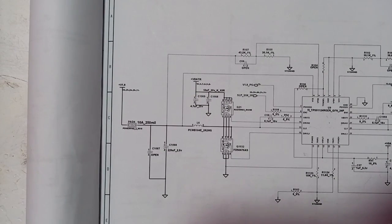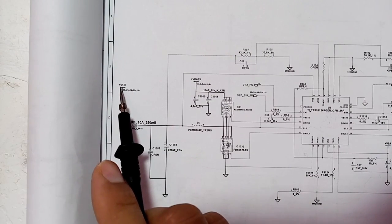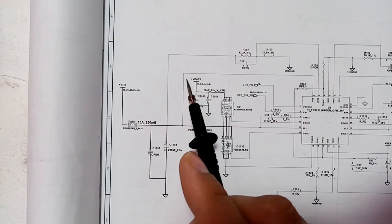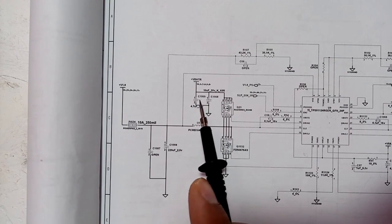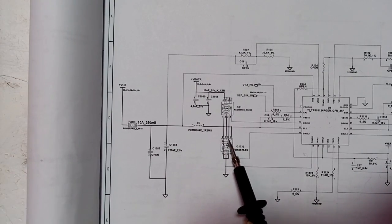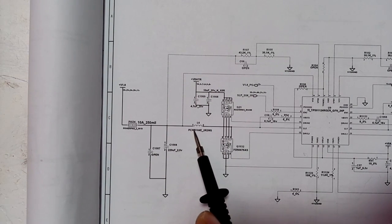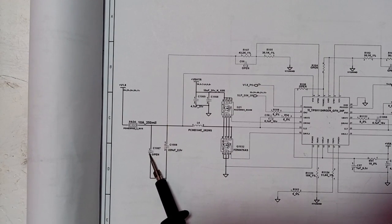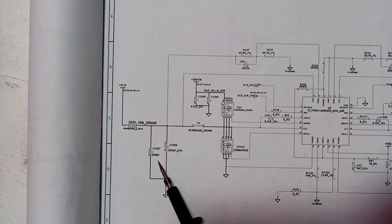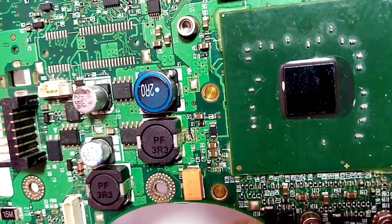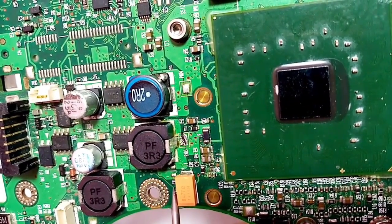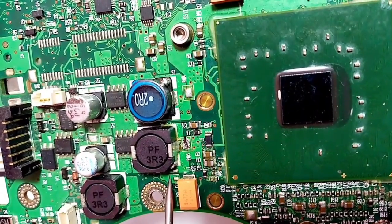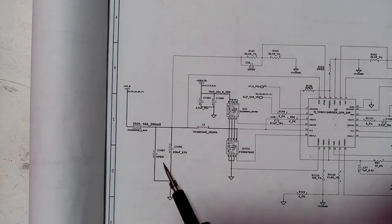The same working principle applies for the other channel — the 1.8 volt channel. We have the input signal VBAT 19 volt, two filtering capacitors, and two MOSFETs. The signal MOSFET is always connected to ground. We have inductor L6, one chemical capacitor and one ceramic capacitor — but this ceramic capacitor is also open, meaning it is not connected in the motherboard. When you find 'open' in the schematic, you will not find that component physically on the motherboard.